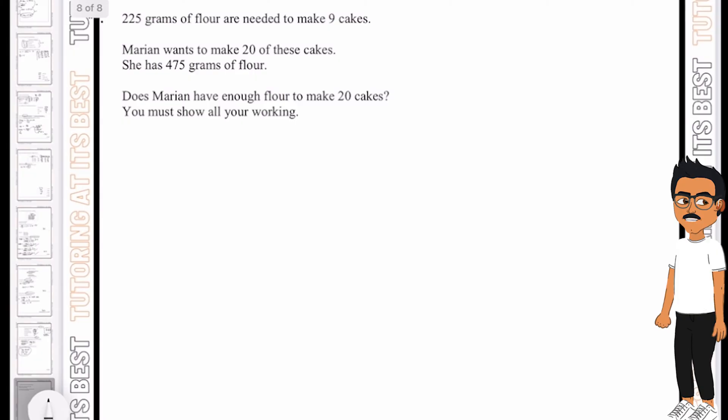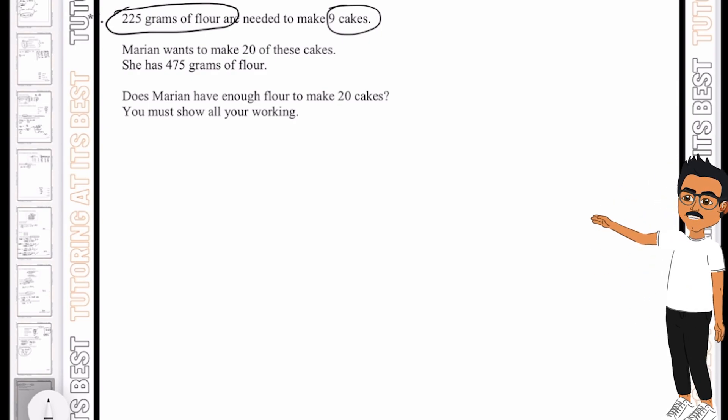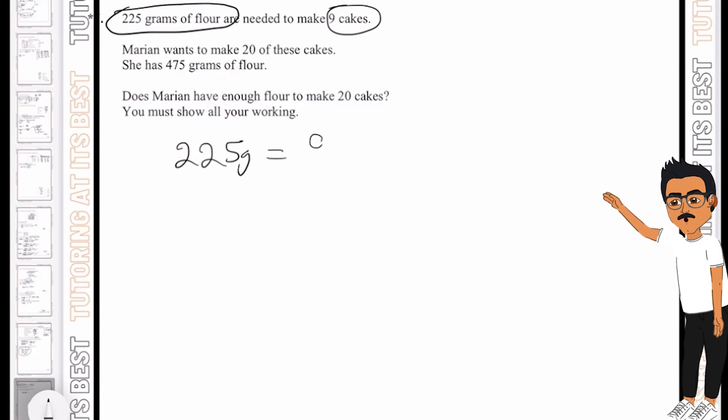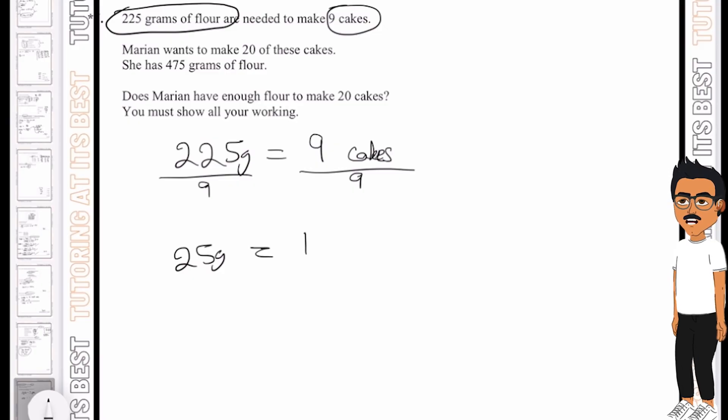Let's now dive into our final question. 225 grams of flour are needed to make 9 cakes. Marion wants to make 20 of these cakes, but she has 475 grams of flour. So does Marion have enough flour to make 20 cakes or not? Let's take a look. So we know that 225 grams equals 9 cakes. We are then going to divide both sides by 9. So we're left with 25 grams for 1 cake.